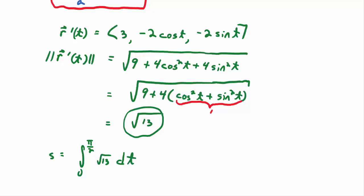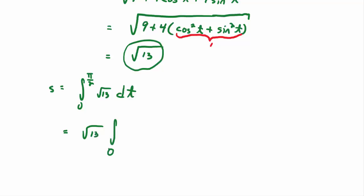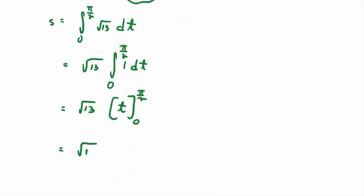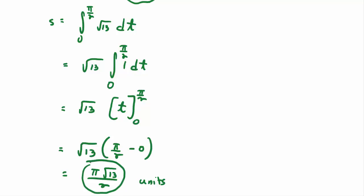Pull out the constant root thirteen times the integral from zero to pi over two of DT. Integrating gives T evaluated from zero to pi halves, which is just pi halves. So the arc length is root thirteen times pi over two, or pi times root thirteen all over two — whatever the units are. That's the length of the arc traced out from T equals zero to T equals pi over two.